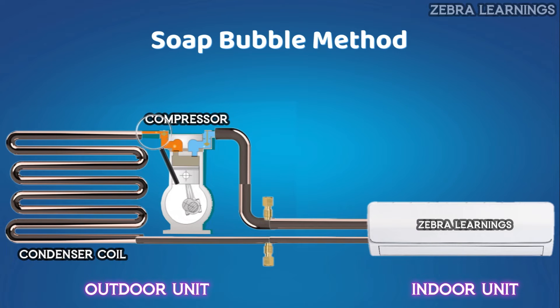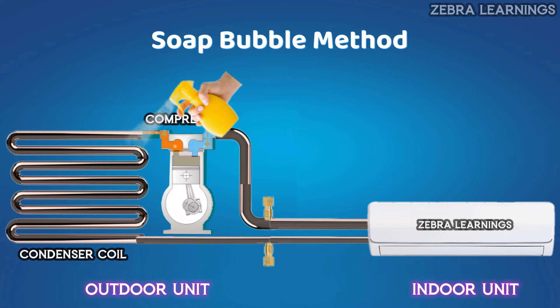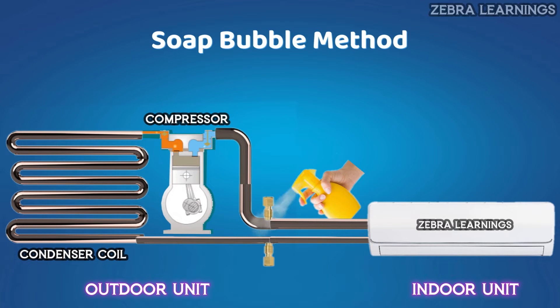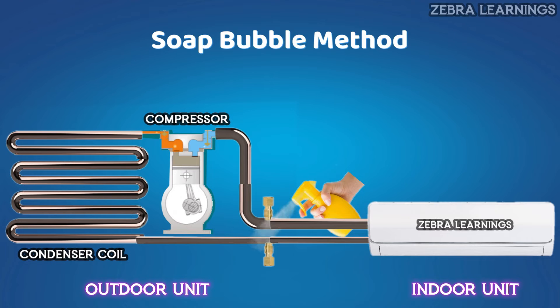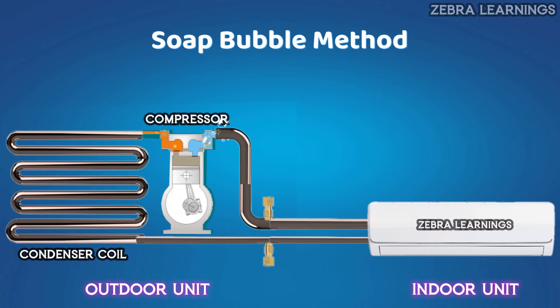First, let's see how to find a refrigerant leak using soap bubbles. Soap bubbles should be applied wherever there is a possibility of leakage — for example, in the joints of evaporator and condenser coils, and service valves. If there is any refrigerant leak, bubbles keep coming out, which means there is a refrigerant leak.